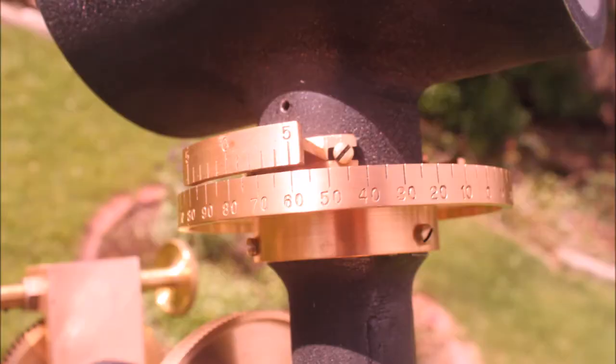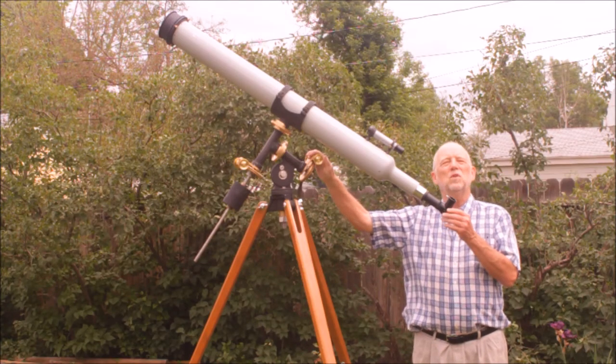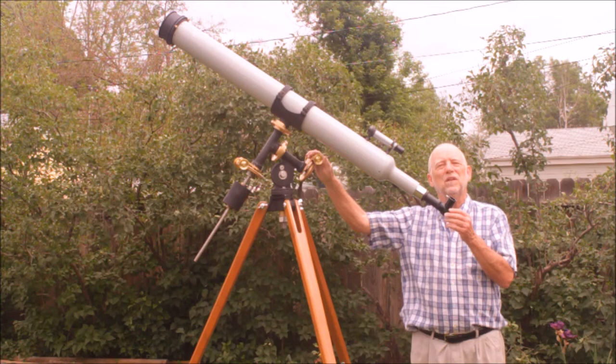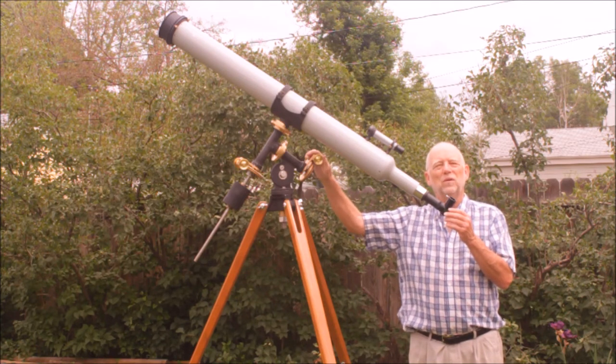Here's a close-up of the beautiful setting circle with the elegant vernier scale. I hope you've enjoyed my tour of this beautiful 4-inch Tinsley F15 refractor on an equatorial mount. Thank you.